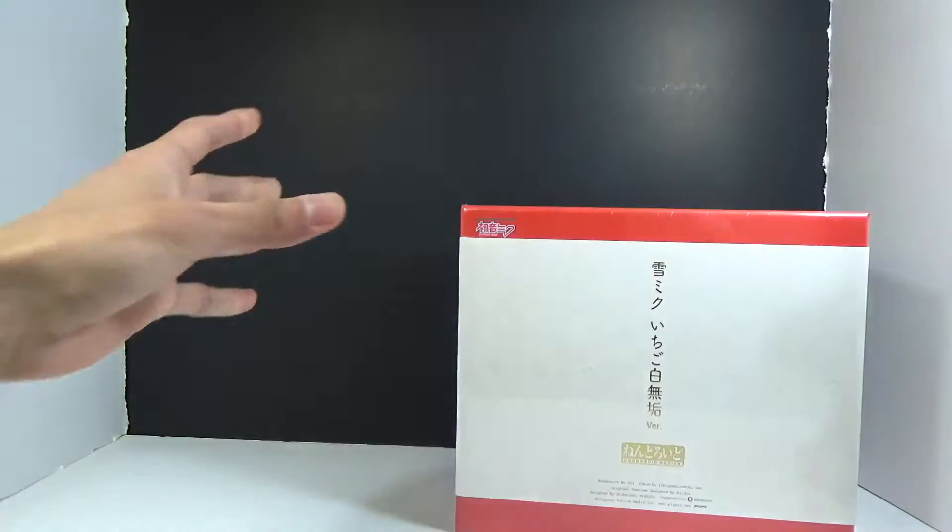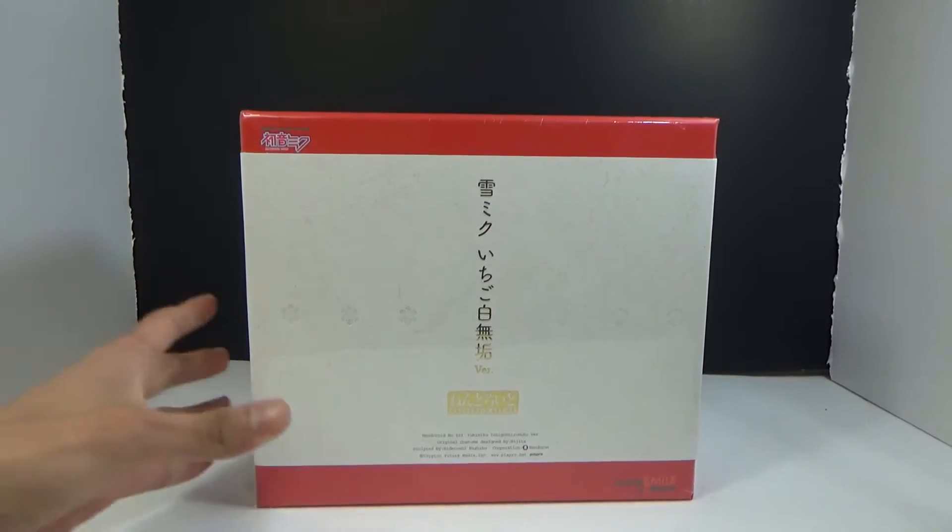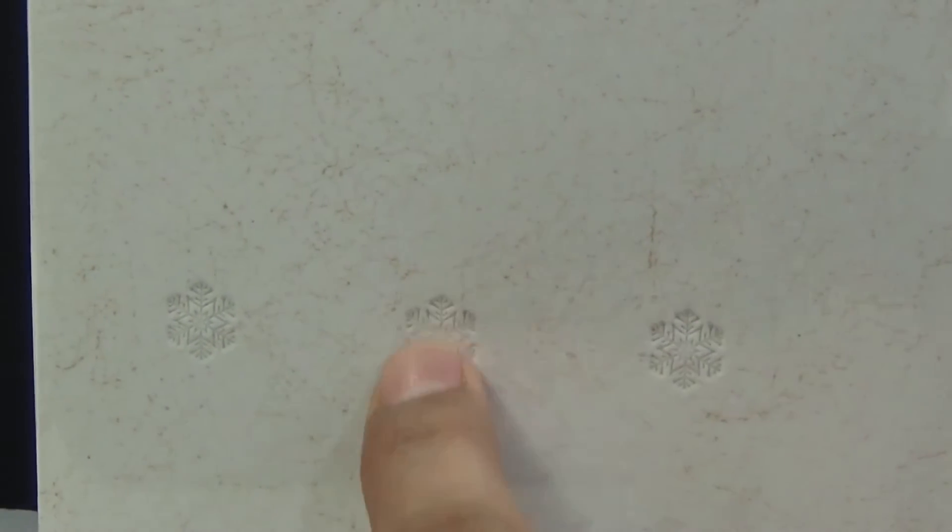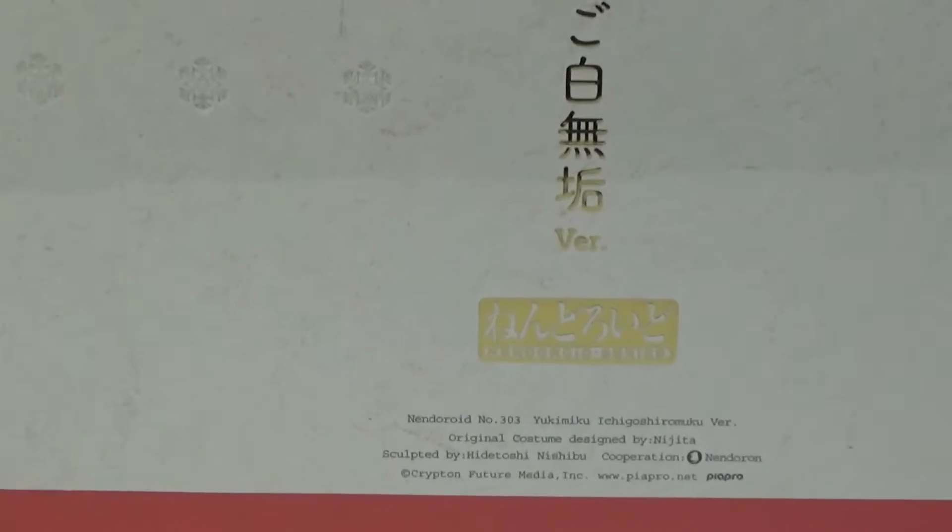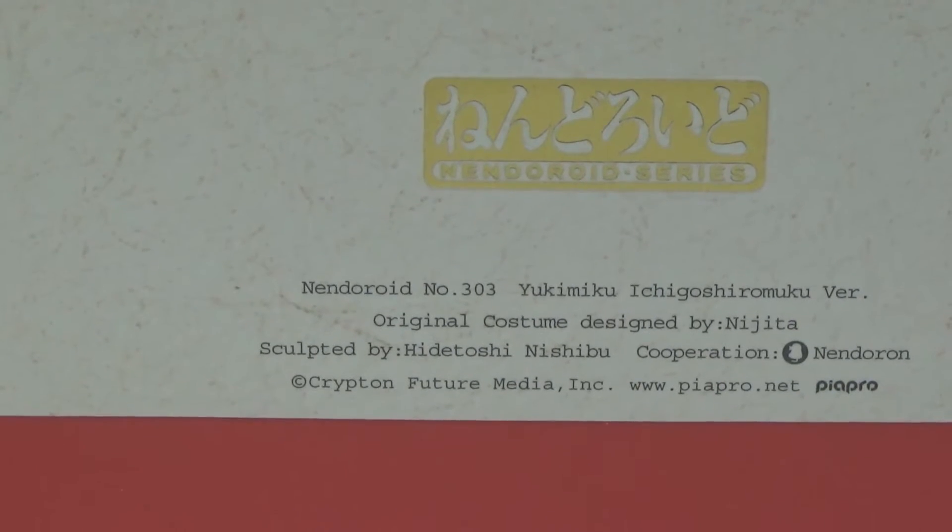Here's the front of the box. It has like gold plating. I don't know what that says, I don't read Japanese. They have little snowflakes around the box and they're like carved in. It just says Nendoroid on the box and who designed it and all that stuff.